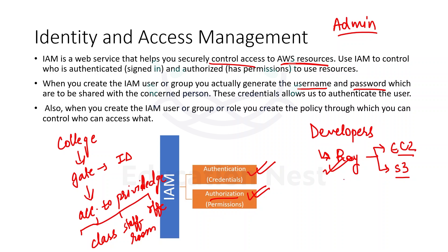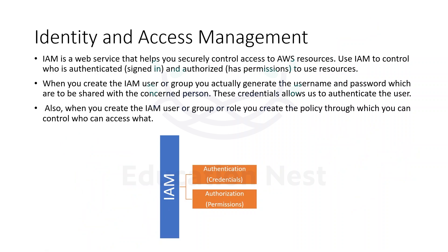So if Roy is only allowed to access EC2 and S3, he only has permission to access EC2 and S3. If he tries to access RDS — that is the Relational Database Service — he will not be able to do so. So IAM provides us both functionalities: authorization and authentication.